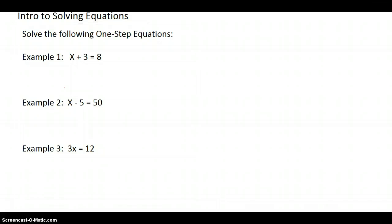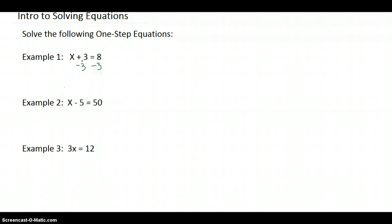Let's look at example one. Example one says that if I take a number — x is my unknown — and I add 3, what unknown do I add 3 to get 8? This is called an equation because it has an equal sign. What number plus 3 is 8? We all know the answer is 5, but to get that, when they become more complicated, what do you do?